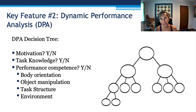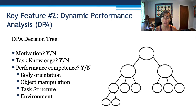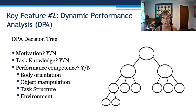Key feature two: dynamic performance analysis, or DPA. There's a decision tree. Is the client motivated — yes or no? Do they have knowledge of the task? Do they have performance competence in terms of body orientation, object manipulation, task structure, or environment? As you can see, this analysis is a glorified, blown-up activity analysis, but we want to really know about the skill and the goal before we embark upon doing it.